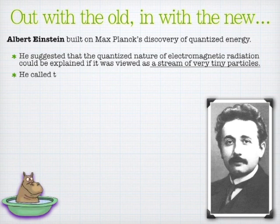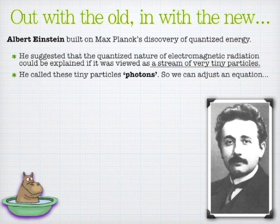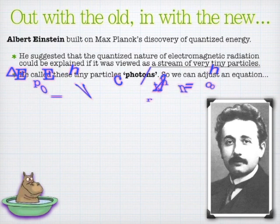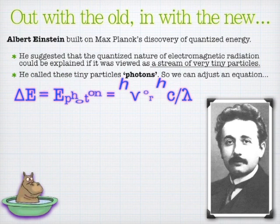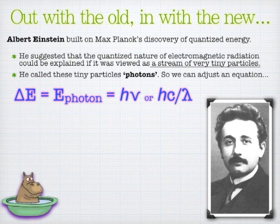He called them photons because Einstein was a gigantic fan of Star Trek. So what we could do is take Planck's equation of E equals H nu, and just change E, that delta E, to just the energy of the photon. We can look at it in terms of frequency or wavelength, totally up to you.